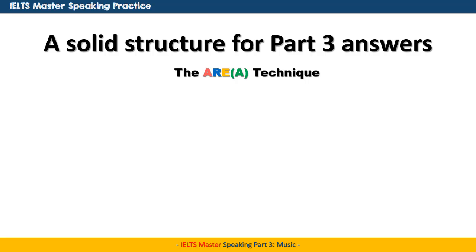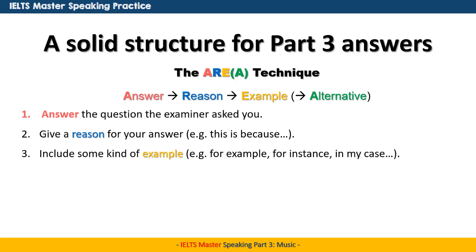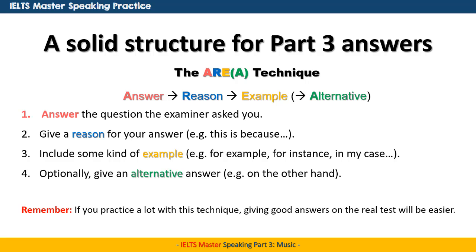AREA stands for Answer, Reason, Example, and optionally an Alternative — that last one is in parentheses because it's optional. First, you're going to answer the question the examiner gave you. Second, you're going to give a reason for your answer — for example, 'this is because.' Next, you're going to include some kind of example — for instance, 'in my case.' Optionally, you can give an alternative answer, such as 'on the other hand.' Remember, if you practice a lot with this technique, giving good answers on the real test will be easier. You don't need to think about AREA on the real test, but if you practice like this, it will definitely help you.